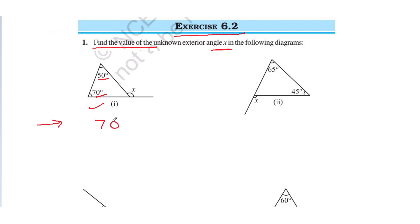70 degrees plus 50 degrees is equal to x — that is the exterior angle. This is the property we have learned: the exterior angle equals the sum of the two interior opposite angles. We will use this property here.